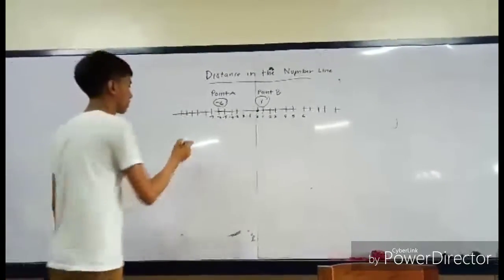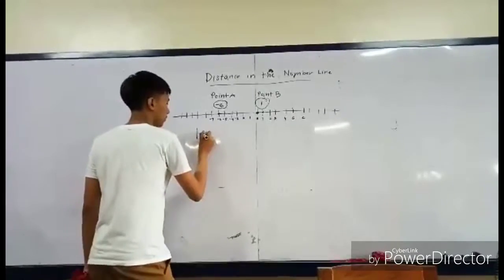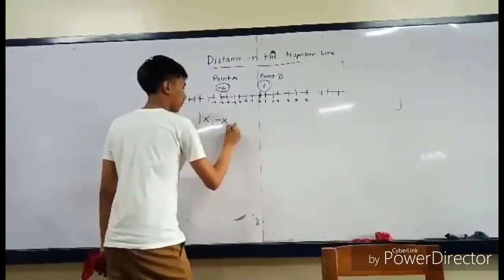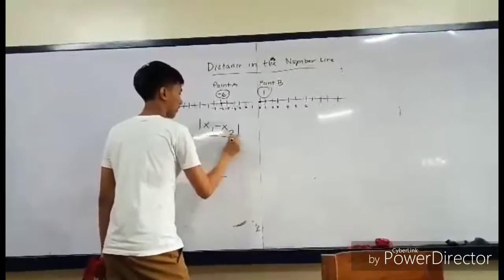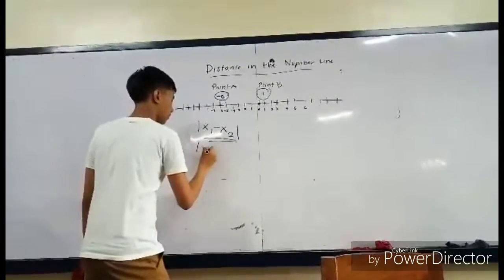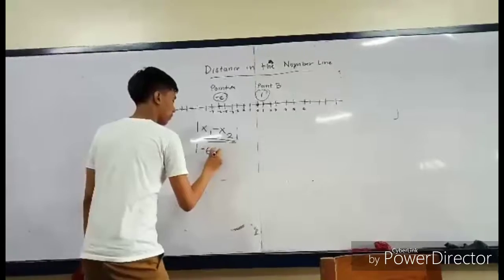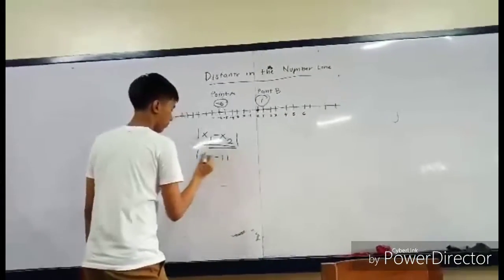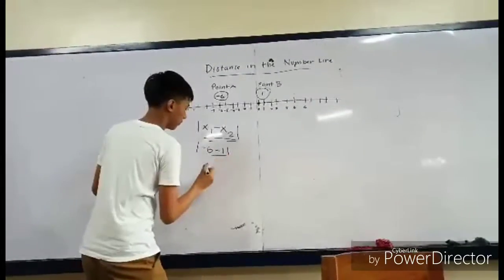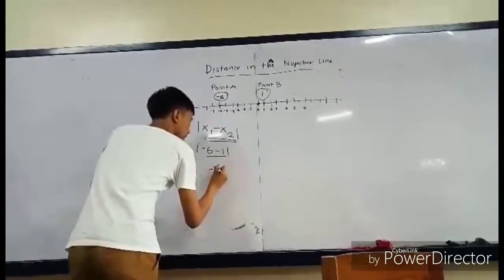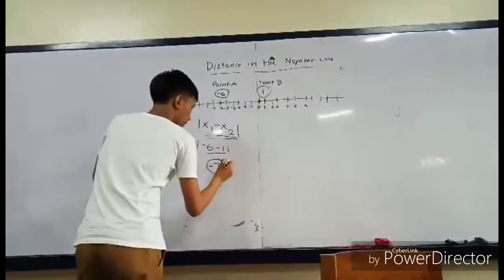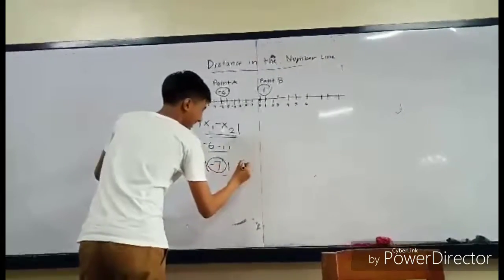The formula for finding the distance is |X₁ − X₂|, then get the absolute value. In this equation, we will subtract negative 6 with 1, so it will be the absolute value of negative 6 minus negative 1. The answer here will be negative 7, and then we get the absolute value of negative 7, which is 7. So the answer to the problem is 7.